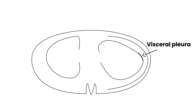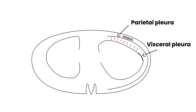Out here you have another lining, and that's actually attached to the chest wall. This is all the chest wall — the ribs, the muscle, and all that. And this lining that's attached to the chest wall is called the parietal pleura. What we're really looking at is the space in between here. That space is given a special name — it's called the pleural cavity.